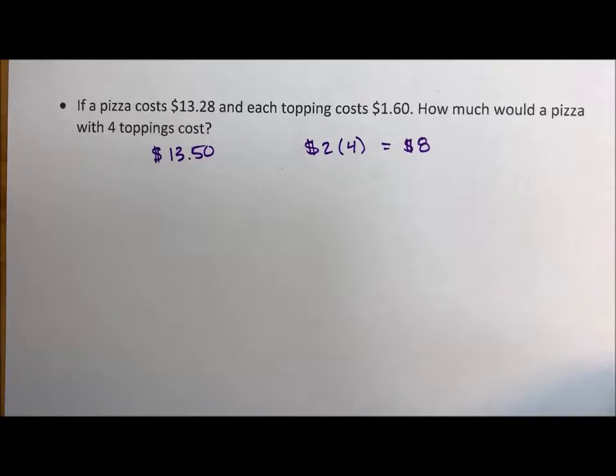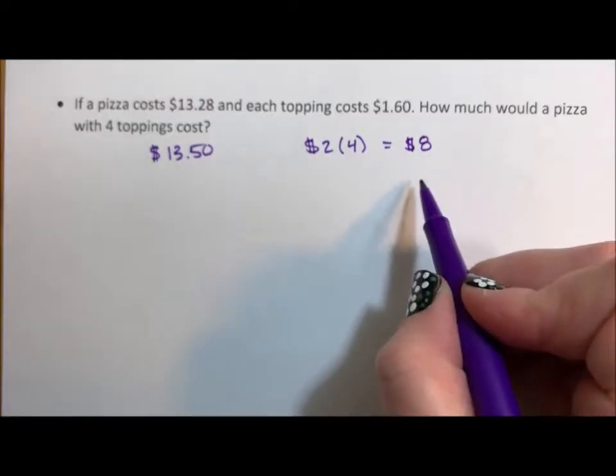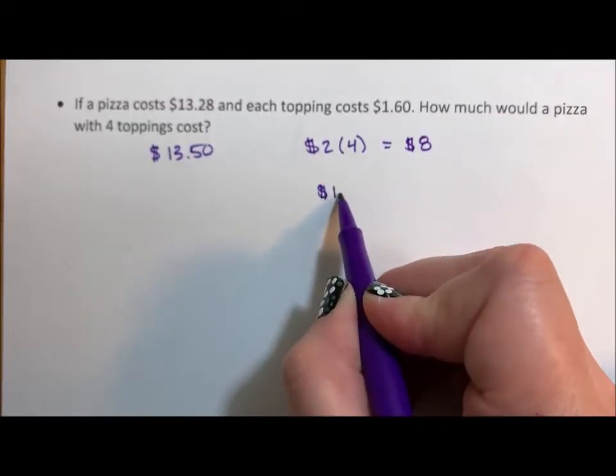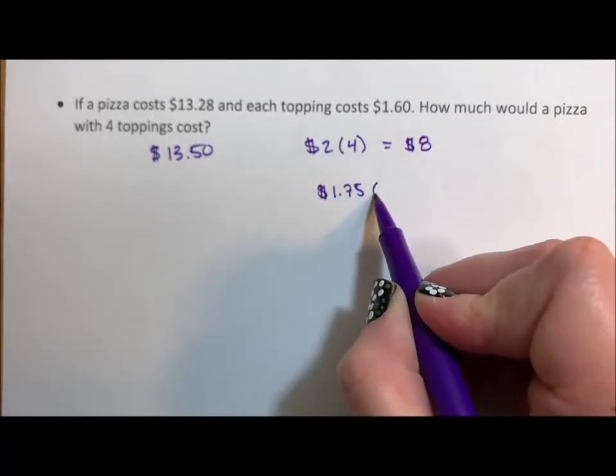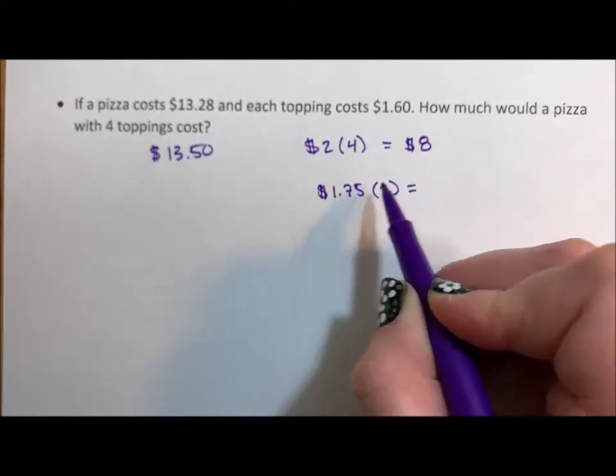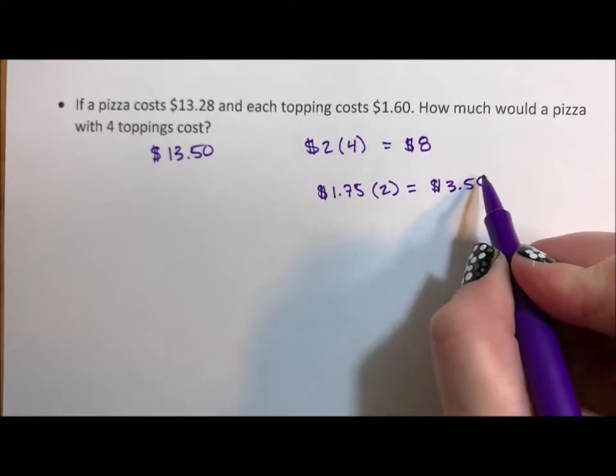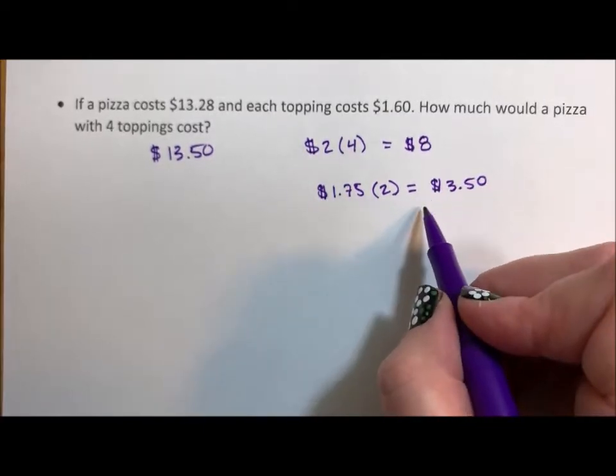I might take it up less to $1.75. If you take it up to $1.75, two toppings then is going to be $3.50. And then two more is gonna bring it up to $7.00.